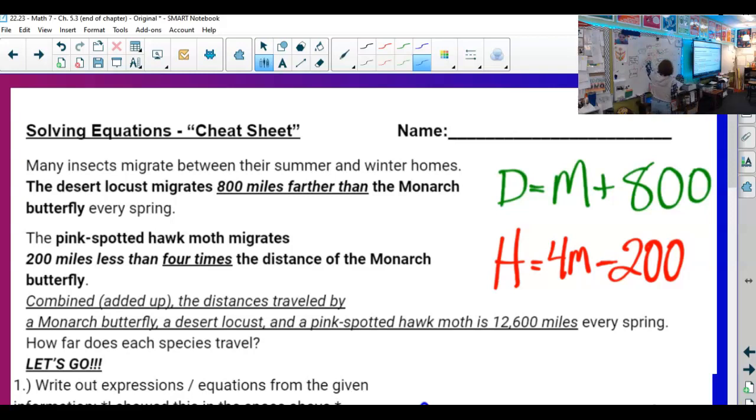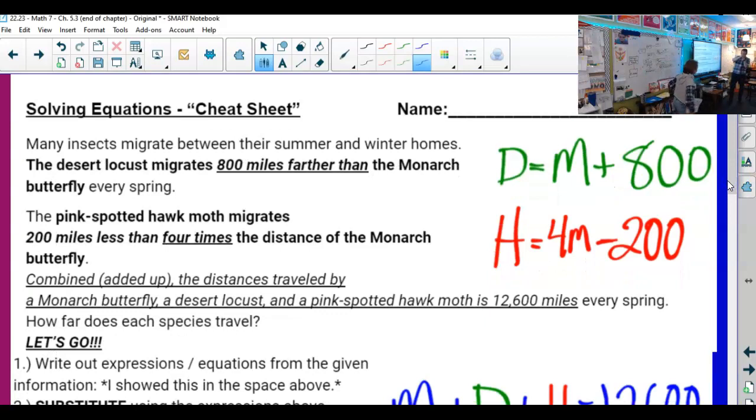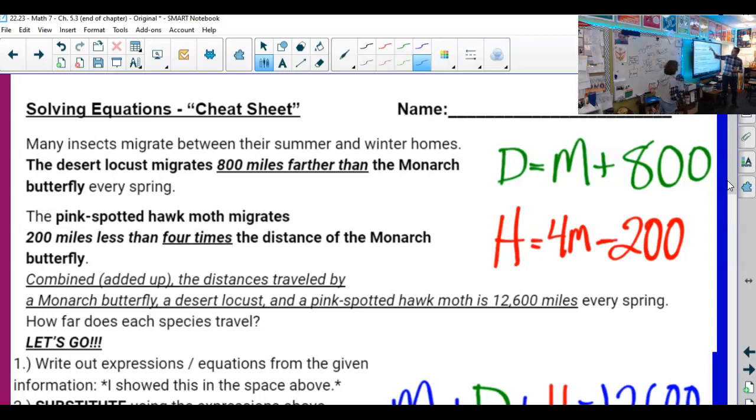It all starts with migration. But then, little do you know, that the pink-spotted moth that actually stands for H is connected to the monarch butterfly that migrates just 200 miles less than four times the monarch butterfly. So then, we have to use either algebra or the 5D process. One of my favorites. Could it possibly be related to the process of elimination? You will never know.